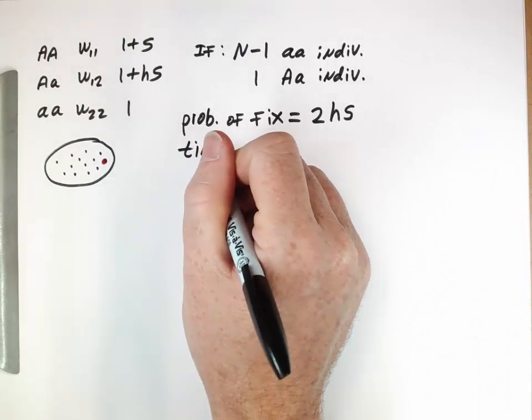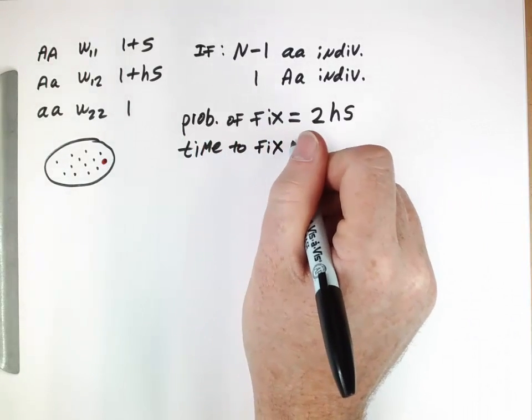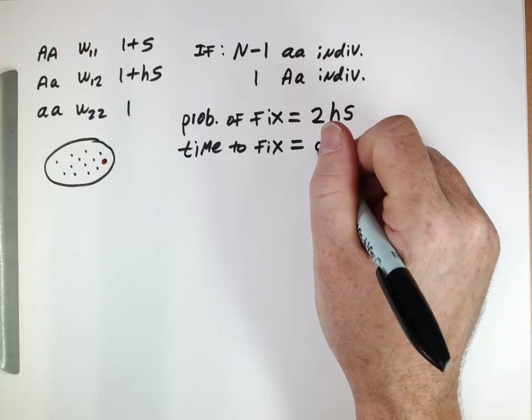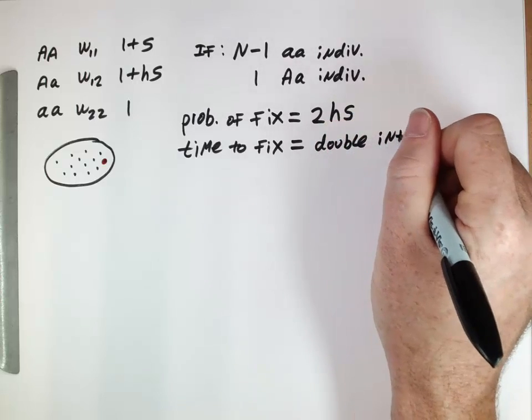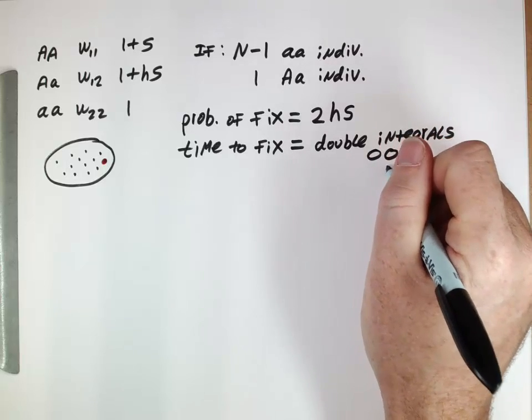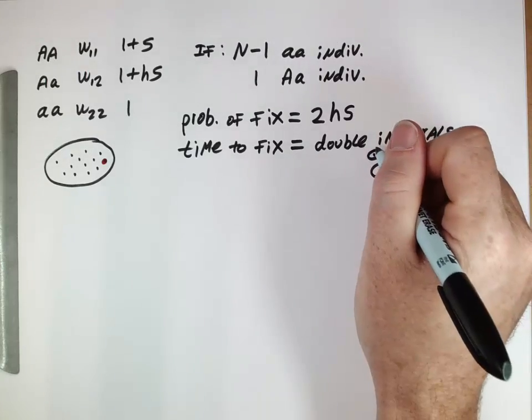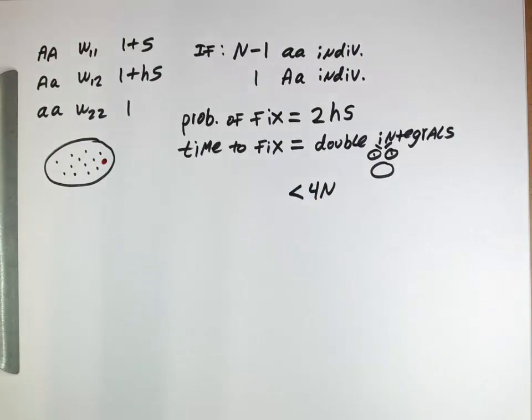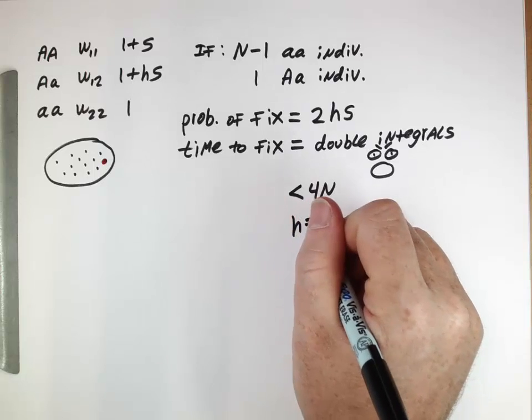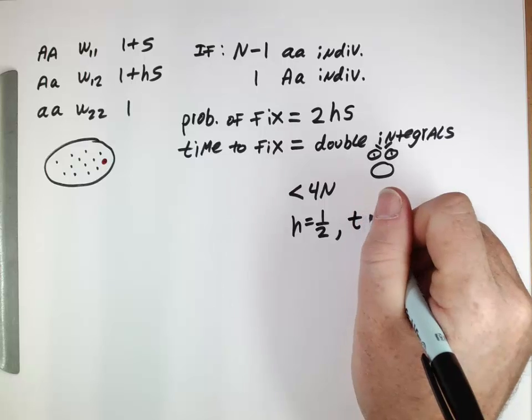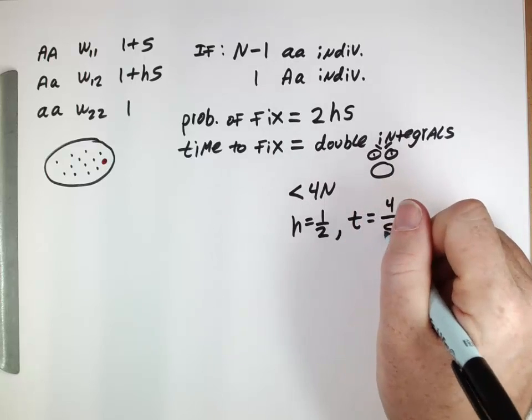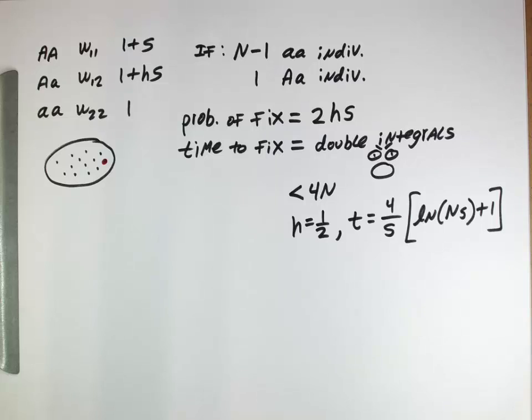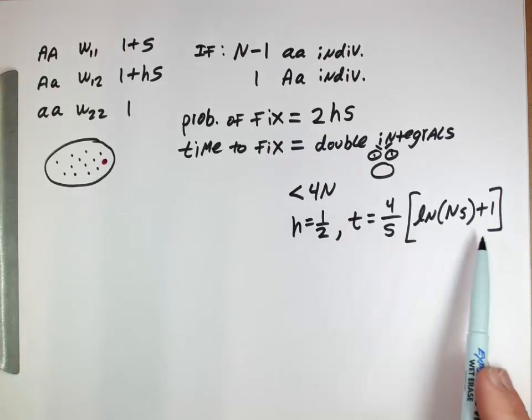And then how long does that take, the time to fix? Well, here technically you actually get all sorts of weird double integrals and horrible things, and it's just a mess, so let's make a scary face or something here, because we don't actually want to calculate those sorts of things. But we do know it's less than 4N, and in fact it hasn't been published yet, but if h is 1/2, then in fact this time to fix is 4 over s times the natural log of Ns+1 is an equation that can be derived. But as I said, this isn't really in textbooks or anything yet.